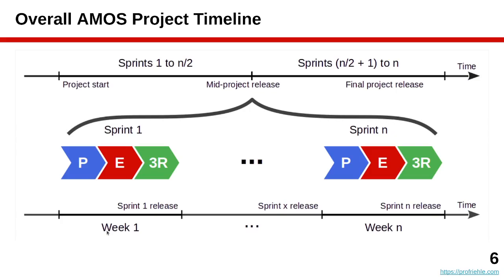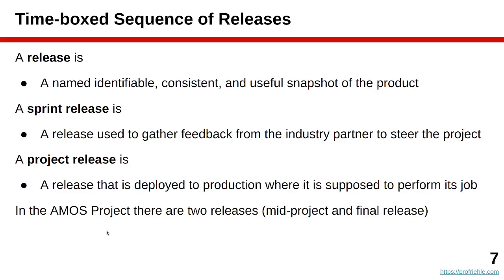In addition to having a sequence of sprints — 14 in total in AMOS — you will also have two more important points in time: the mid-project release and the final project release. Scrum in AMOS is structured not only as time boxes but time boxes with results, so there needs to be a deliverable at the end of each time box. This value increment, as Scrum calls it, is in our case usually a software release — a named, identifiable, consistent, and hopefully useful snapshot of the software.